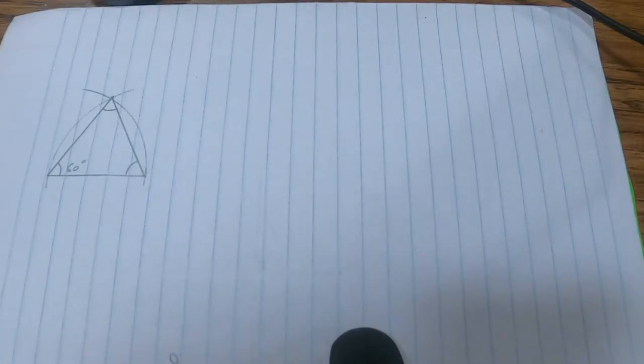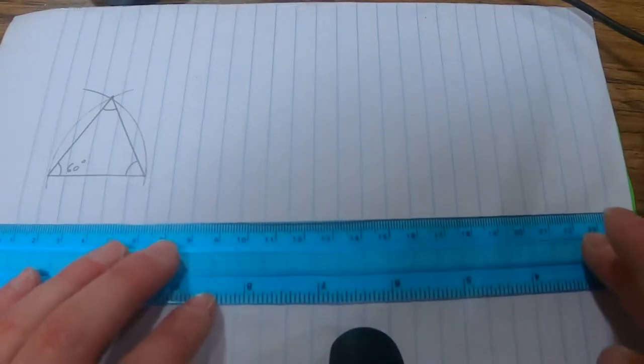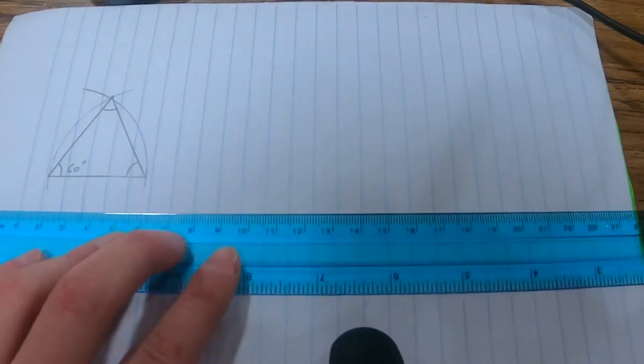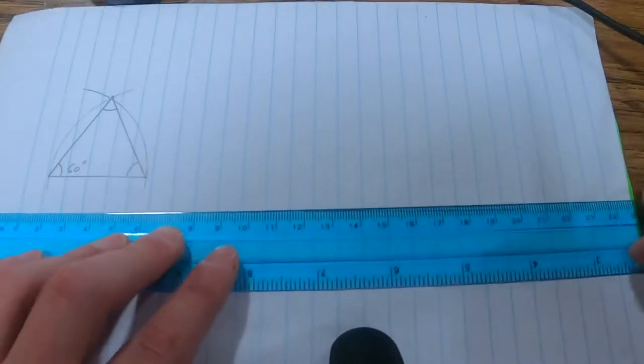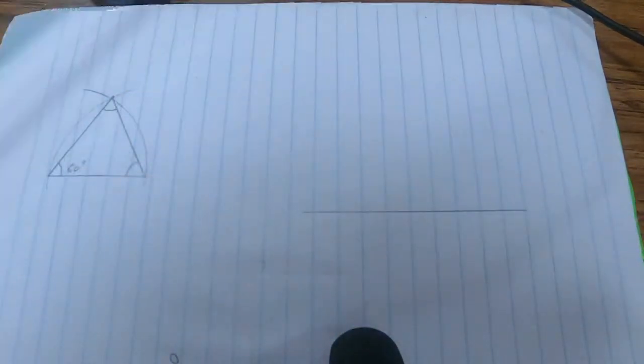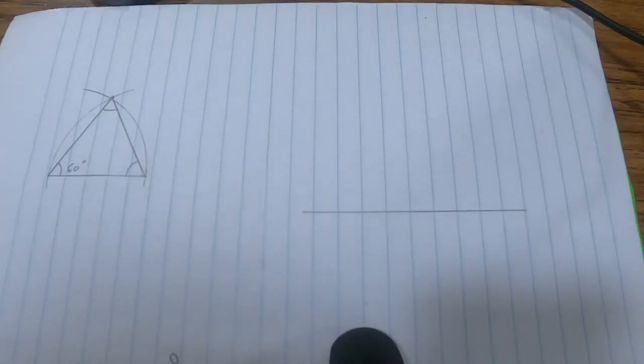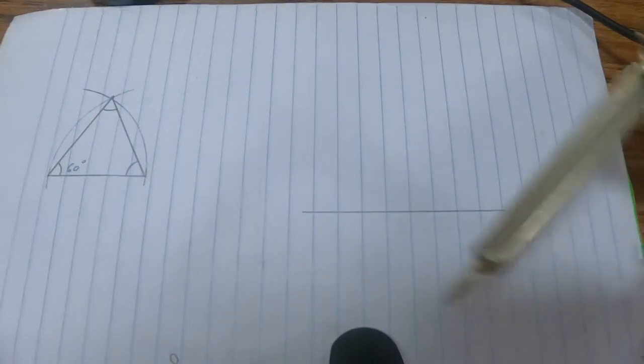So what you're going to do is first draw any line. I would recommend not a huge line because it's going to be the same length for all of your sides here. So hopefully that one is not too big that I just drew. Then you're going to take your compass and make it the exact same size as the line you just drew.